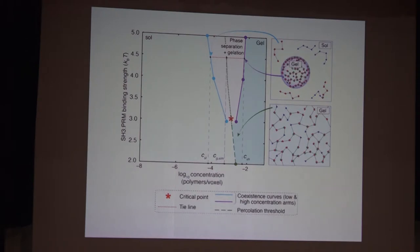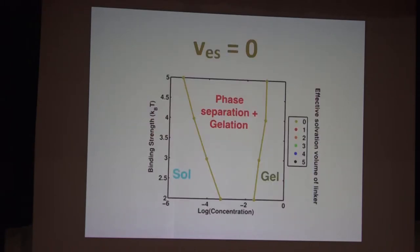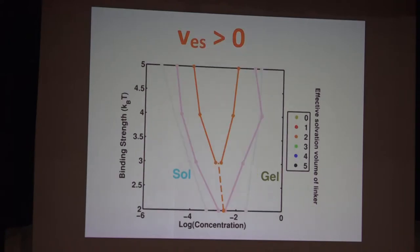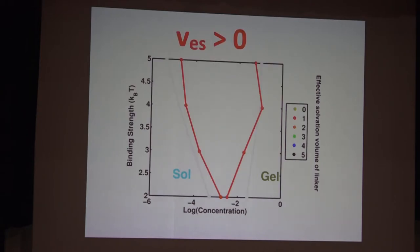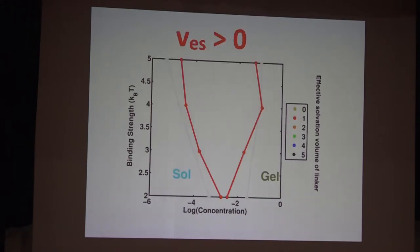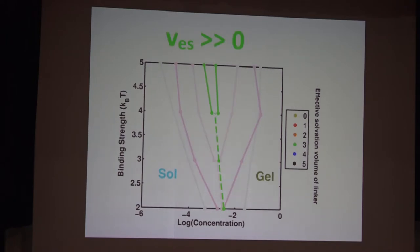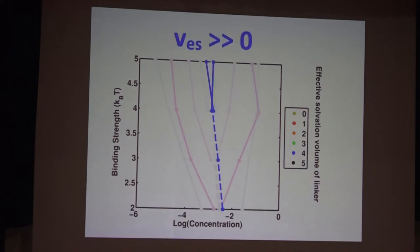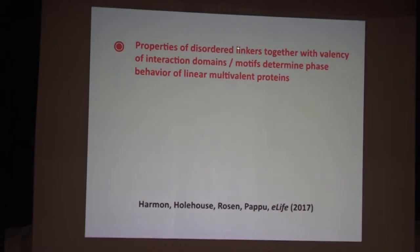The width of the two-phase regime that defines the convolution of phase separation and gelation is tunable by modulating the effective solvation volume. As I increase the effective solvation volume, the width of the two-phase regime shrinks, so you start to get gelation without phase separation. Conversely, when I increase the girth of the linker, you end up with sol-to-gel without much phase separation. This becomes a tunable commodity — the properties of disordered linkers together with the valence of interaction domains determine the phase behavior.